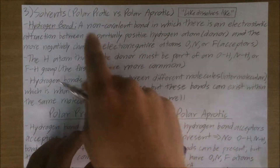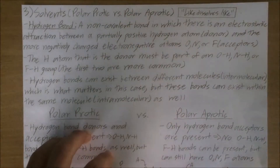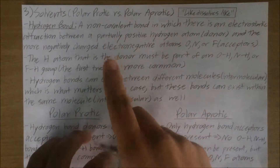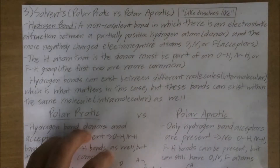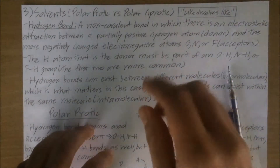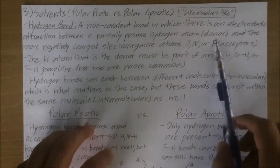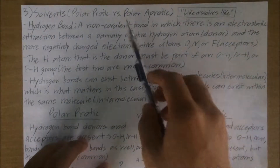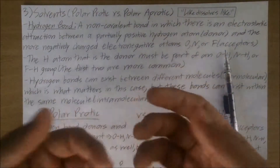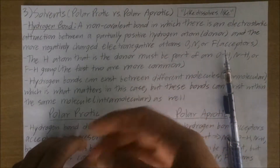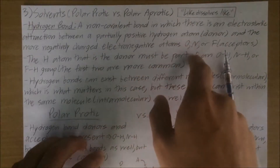Before we talk more about the differences between polar protic and polar aprotic solvents, let's talk about what a hydrogen bond means, because this is also an important concept to understand the differences between these two solvents. A hydrogen bond is essentially a non-covalent bond, and in this bond we have an electrostatic attraction that takes place between a hydrogen bond donor and a hydrogen bond acceptor. A hydrogen bond donor is going to be a hydrogen atom, which is partially positive, while our hydrogen bond acceptor atom is going to be a lot more electronegative, and these acceptors can either be oxygen, nitrogen, or fluorine.